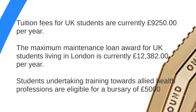UK tuition fees are currently £9,250. For UK students living away from the family home in London, the maximum maintenance loan from Student Finance England is £12,382 per year. Students undertaking training towards allied health professions — including physiotherapy, radiography, paramedic science, midwifery, and nursing — are also eligible for an NHS bursary of £5,000 per academic year.